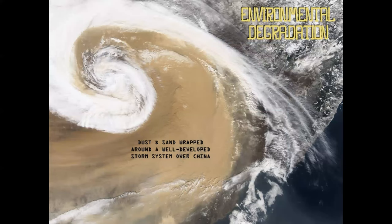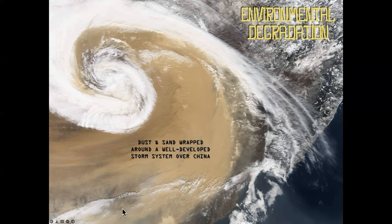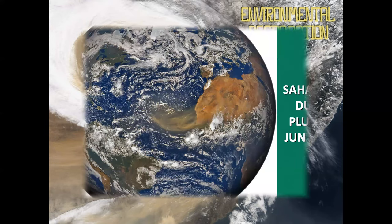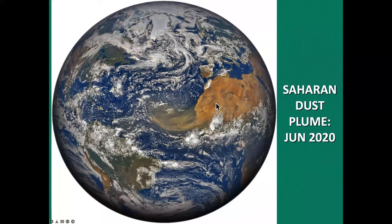Here's an issue of environmental degradation — this is northeastern China, and this is dust wrapping around a low pressure system. It's a function of the Gobi Desert and other desert regions in northeastern China. Here is a dust plume that left the Sahara and carried across the Atlantic Ocean all the way to Texas in 2020. You can see how places are connected because of wind systems, and we'll talk about those wind systems in another lesson.